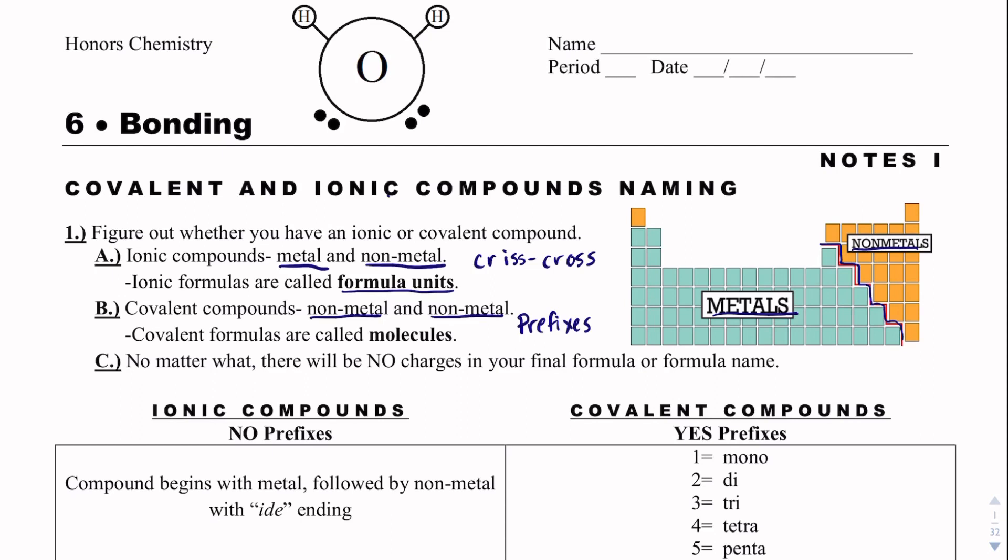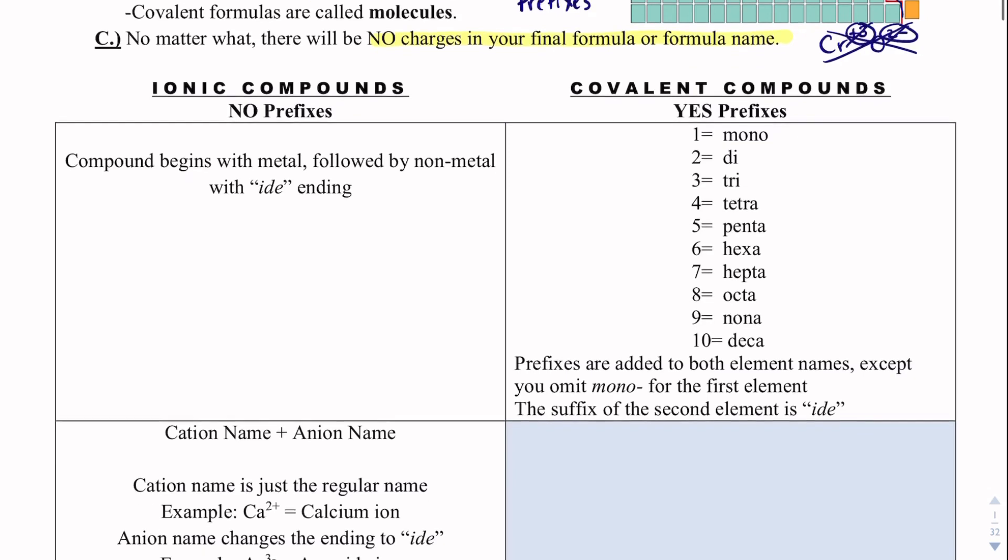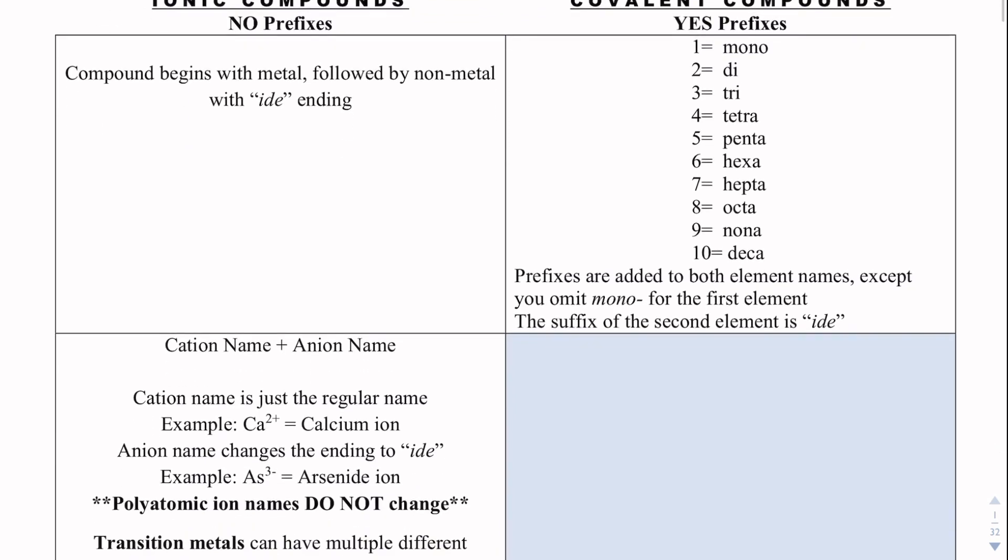Covalent compounds are going to be simply between nonmetals. These are going to be called molecules, and we will use prefixes. We will not do the crisscross method. No matter what, and this is something that takes some time to get used to, but you need to know is that there will be no charges in your final formula. So we would never have something that's like Cr plus 3 O 2 minus or anything like that. We will have no superscripts. We will only have subscripts.